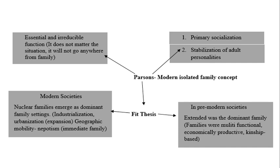An important part of socialization according to Parsons is gender role socialization. If primary socialization is done correctly, boys learn to adopt the instrumental role — the breadwinner role — going out to work and earning money. Girls learn to adopt the expressive role, doing caring work, housework, and bringing up children. The stabilization of the adult personality refers to the emotional security achieved within a marital relationship. Working life in industrial society is stressful, and the family is a place where the working man can return and be de-stressed by his wife, reducing conflict in society. This is also known as the warm bath theory.